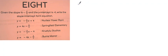So the slope-intercept form equation is y equals m, which is the slope, times x plus b. b is the y intercept.